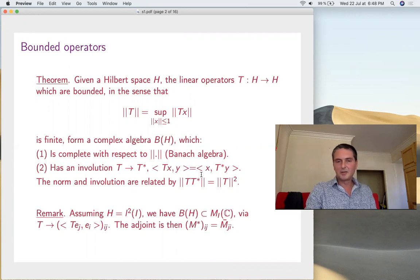I also have an involution given by this formula. That's a bit as for the usual matrices. What's the proof of this? One axis is fixed, this is linear, so it must be scalar product of something. You can call that something T star of Y, that's your T star. The norm and involution are related by this tricky formula here. That's exactly as for matrices, because for real matrices, in both cases, you get the biggest eigenvalue in absolute value squared.